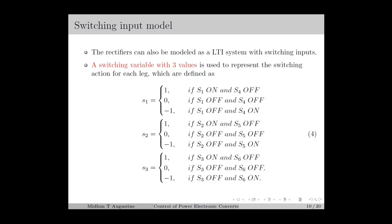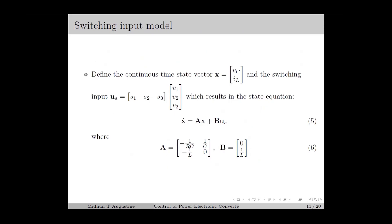Here, if both switches are off, we denote the switching variable by 0. If one switch is on and the other is off, then it can take either plus 1 or minus 1. By defining the continuous time state vector and the switching input, we can represent the rectifier as an LTA system as in equation number 5, with A and B matrices as in equation number 6.